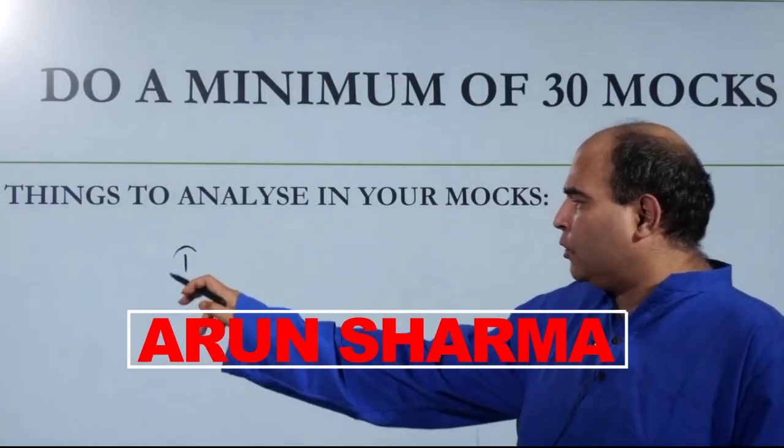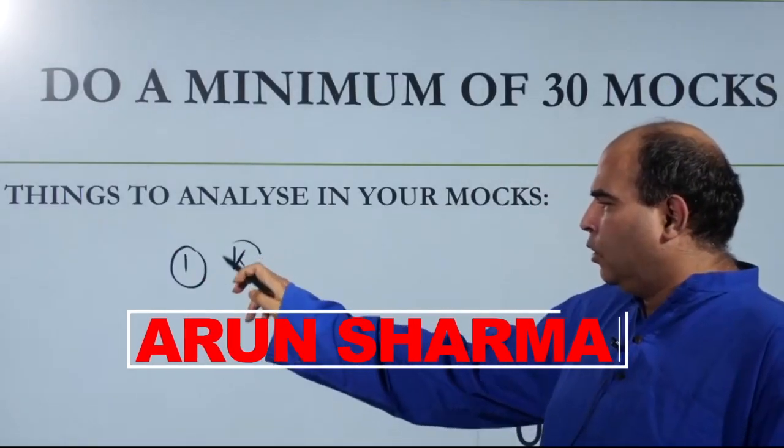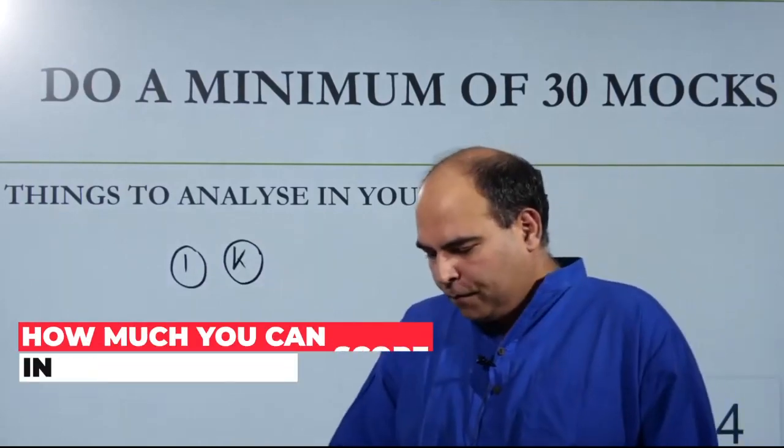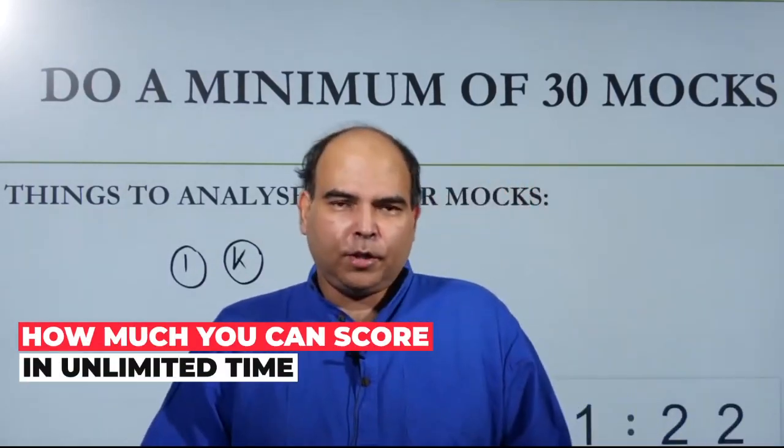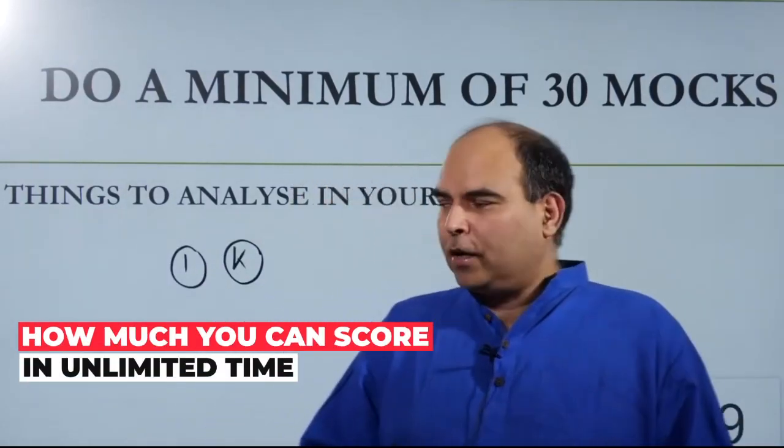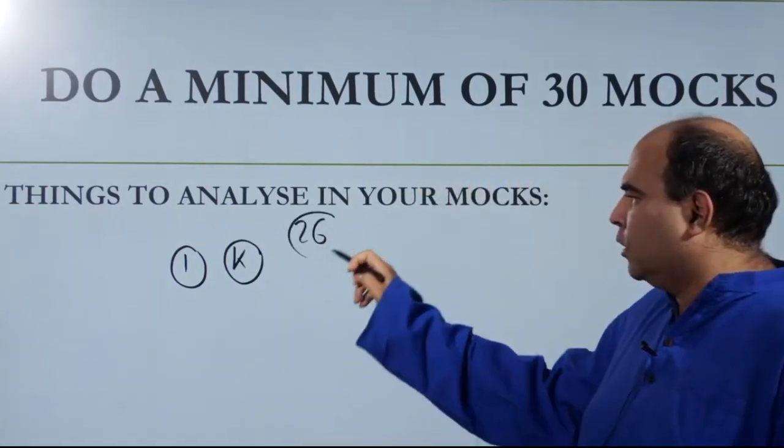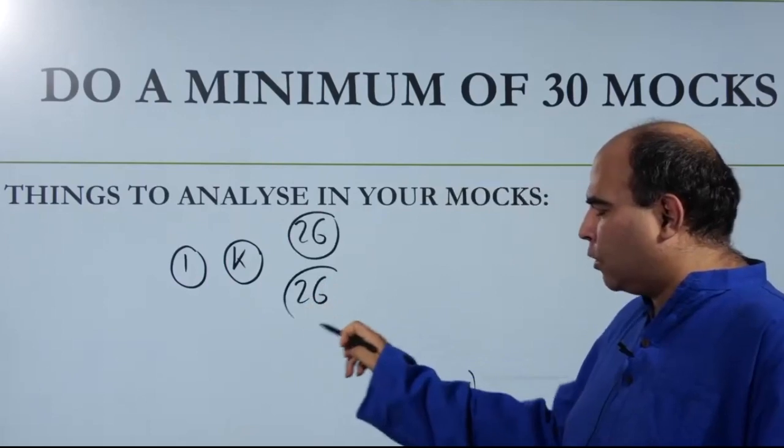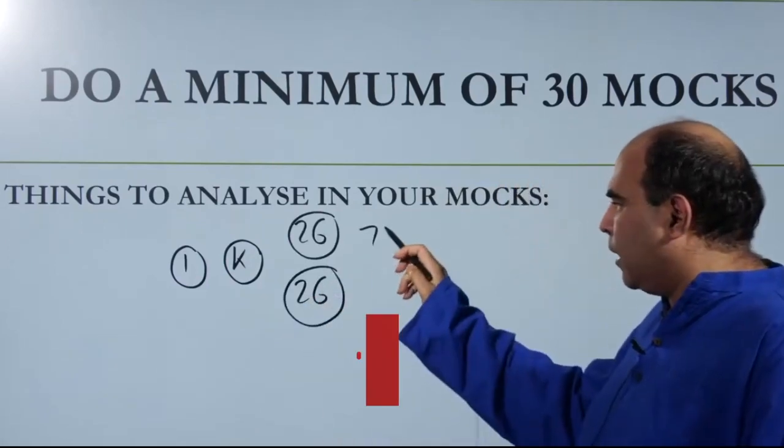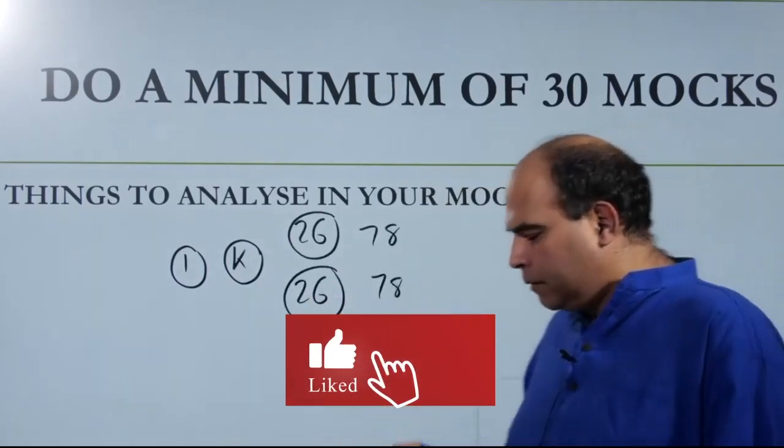First of all, you need to analyze your knowledge on each section. If you have unlimited time, how much are you able to score? For example, let's say we're talking about a 26 question section test on quants or a 26 question section test on verbal, which means 78 marks.